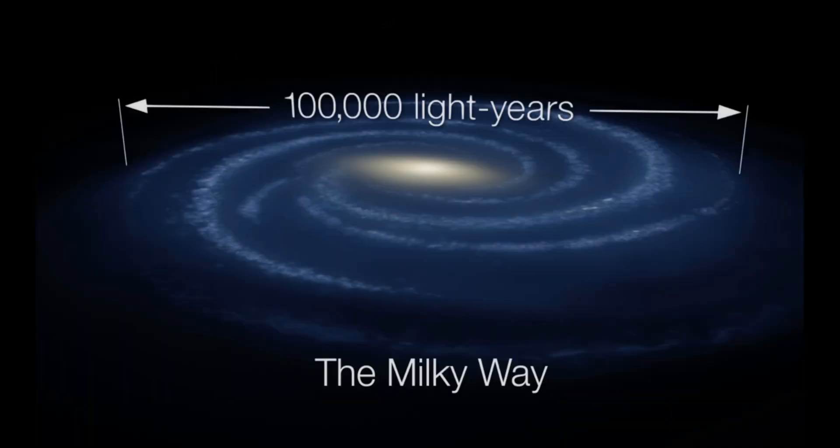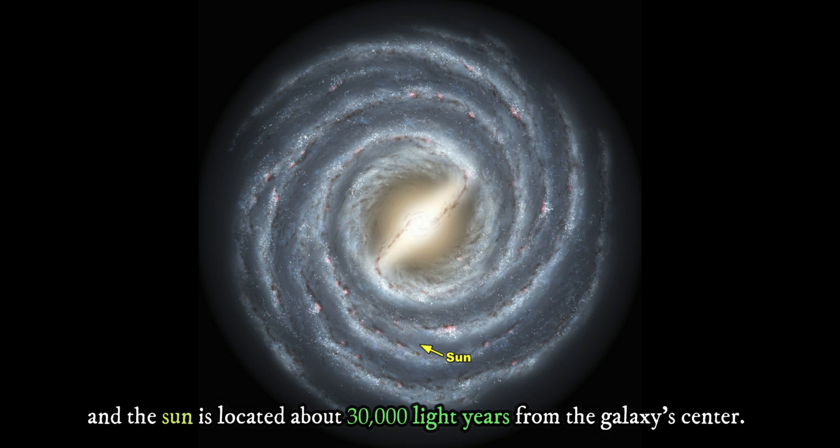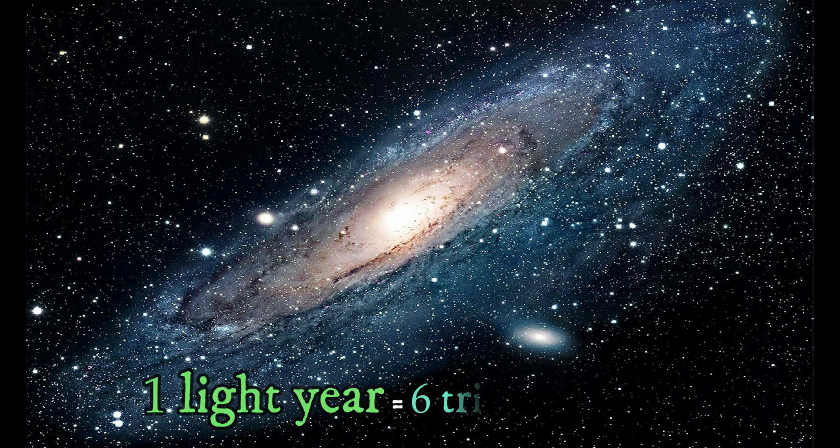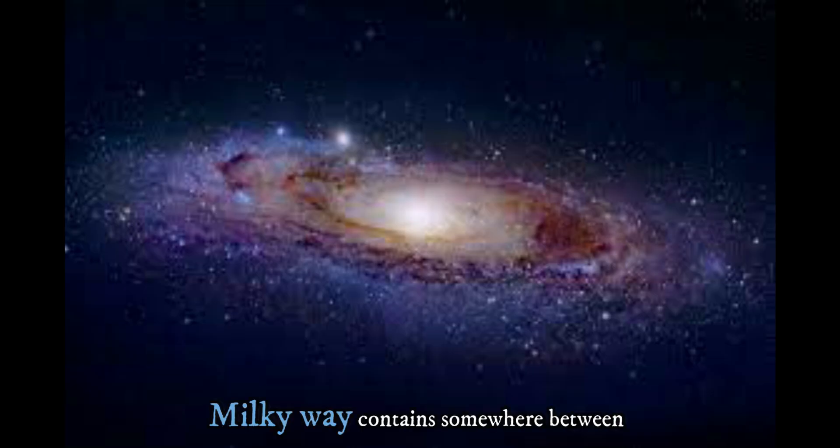The Milky Way's estimated diameter is around 100,000 light years, and the Sun is located about 30,000 light years from the galaxy's center. One light year is equal to 6 trillion miles.